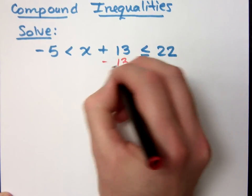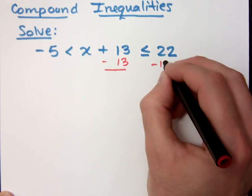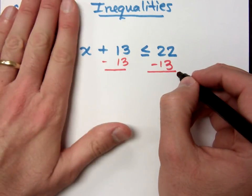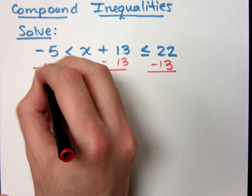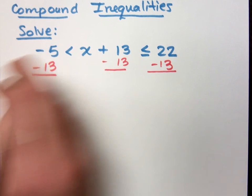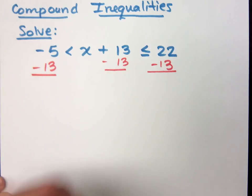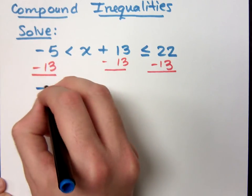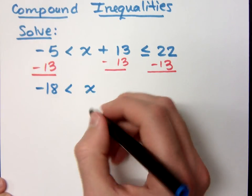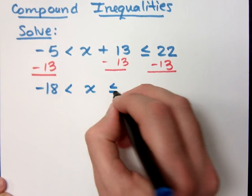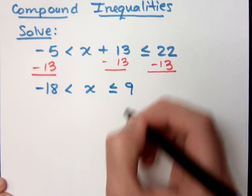So if I subtract 13 from this side and this side, just like I was talking about doing, that would get the x by itself. However, since this is a three-part inequality and all these guys are connected, what you do to one piece, you have to do it to all pieces. So I get negative 18 is less than x is now by itself, and this is less than or equal to 9.